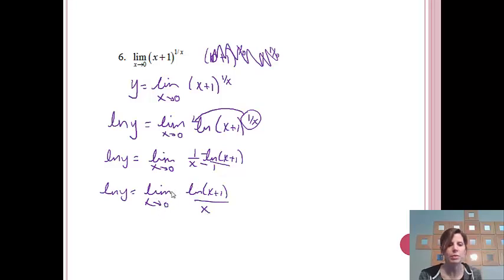Now notice, if I go to try to plug in 0, and again, I'm just going to deal with the right side right now. So the natural log of y, if I go to plug in 0 right now, I'm going to get the natural log of 1 over 0, which would give me 0 over 0. And I did get an indeterminate form, which means that I'm allowed to use L'Hopital's rule.